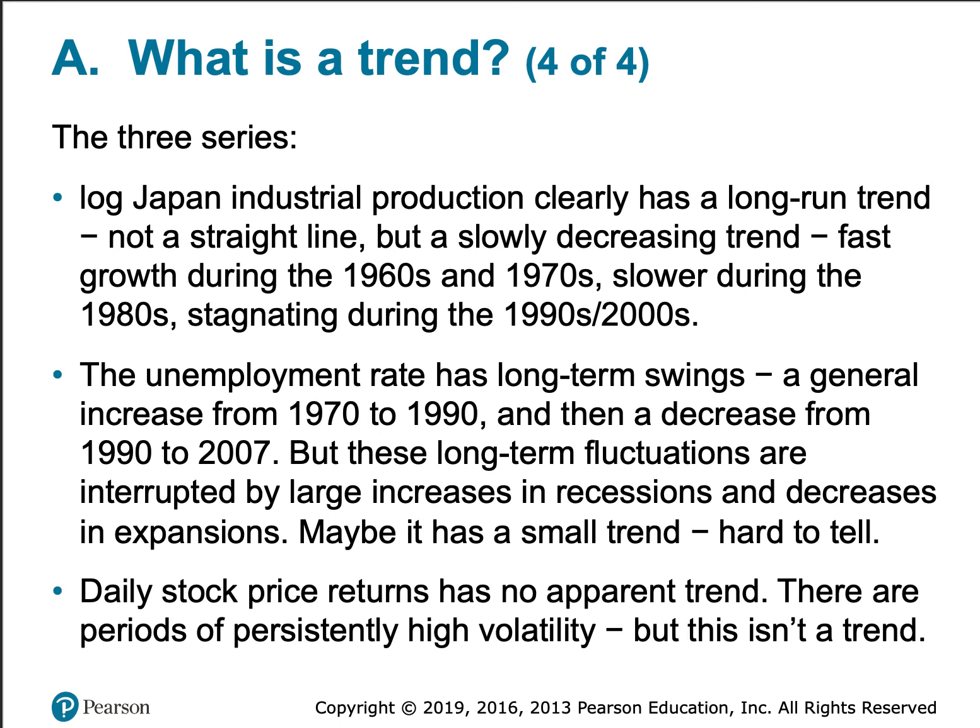Let's summarize what we have discussed about these three series. The log Japan industrial production series clearly has a long-run trend. It's not straight, but there's a slowly decreasing trend — meaning the trend is upward but the rate of increase is decreasing. There was fast growth during the 1960s and 1970s, slower growth during the 1980s, and then stagnation during the 1990s and 2000s when the industrial production index levels off.